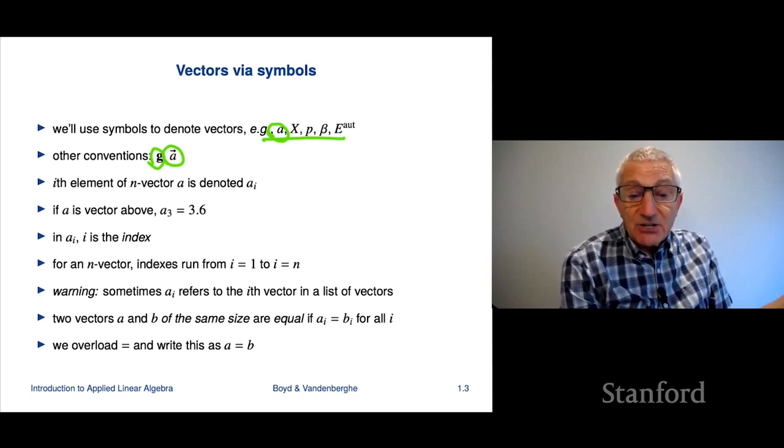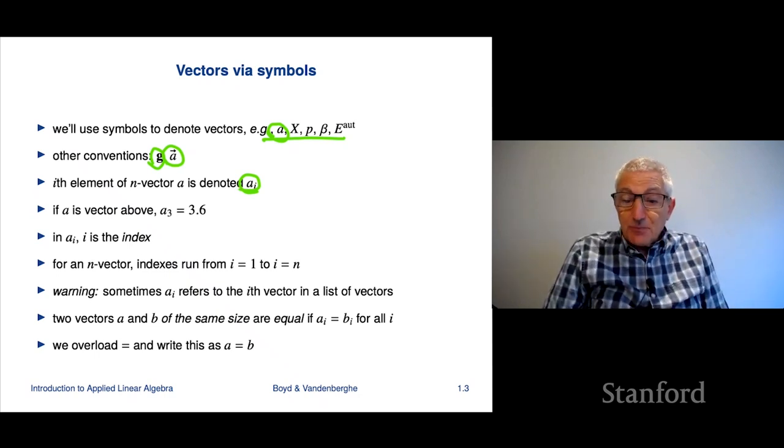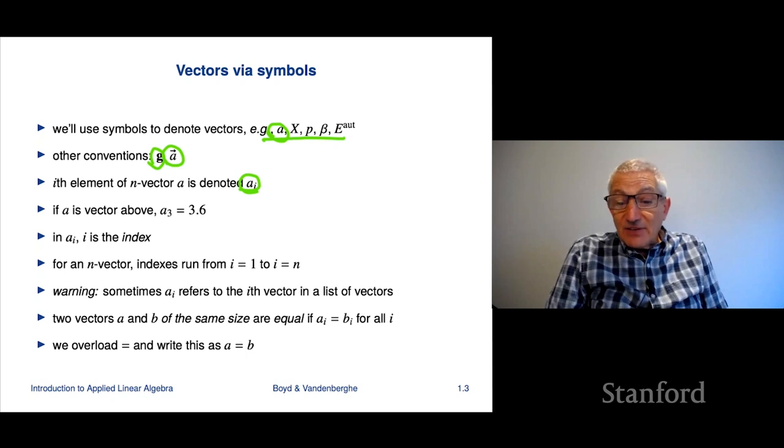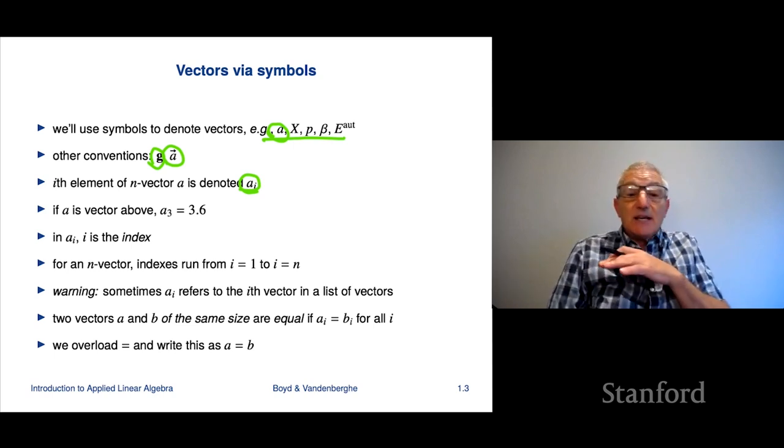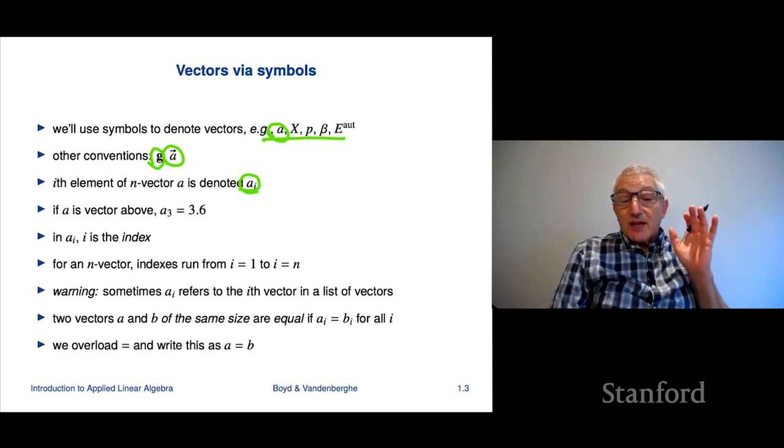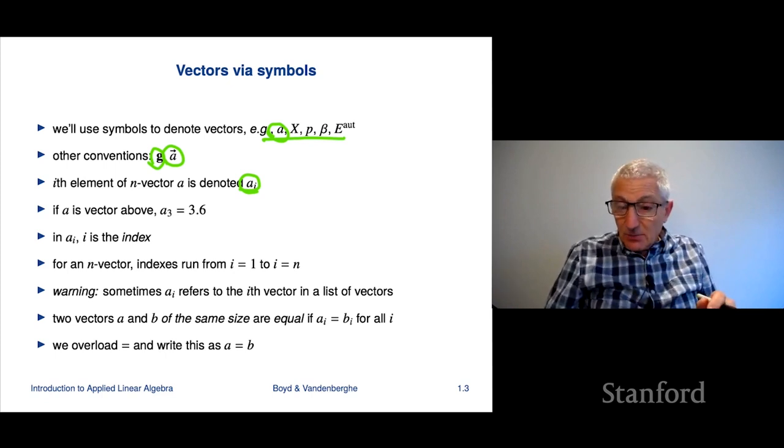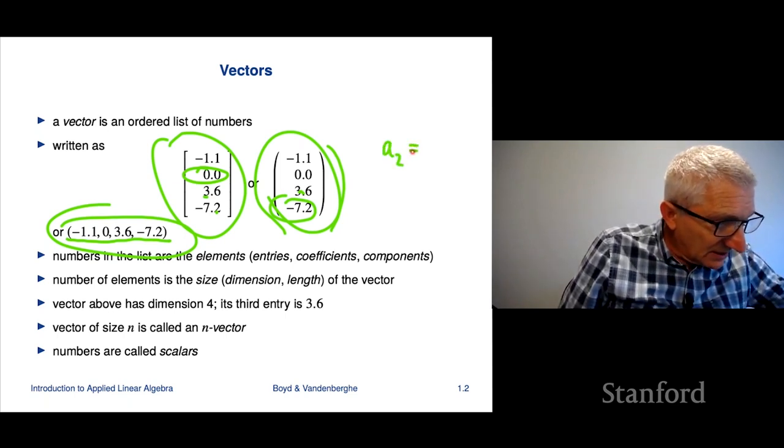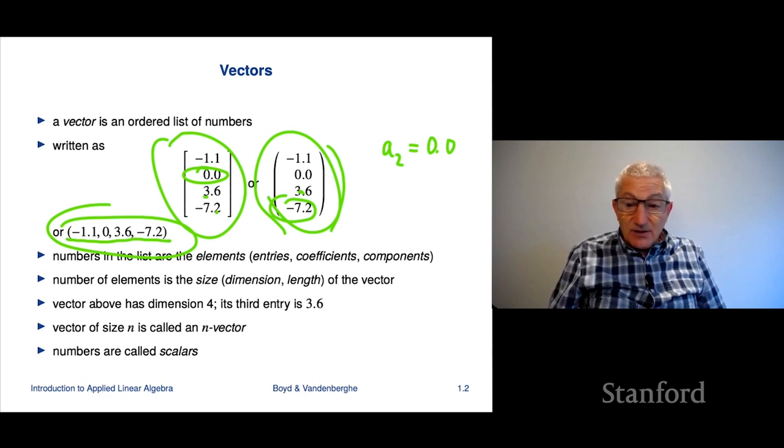When you have abstract notation, the question is how do you refer to an entry of a vector? That's done with subscripting. If a is a vector, an n vector, then you would denote the i-th entry element or coefficient as a sub i. Obviously here, i goes from 1 to n. If you have a 4 vector and you say, what's a sub 5, the answer is it's meaningless. So this is how we're gonna denote an entry, by a sub i. For example, if this vector is called a, then a2 is equal to 0.0.